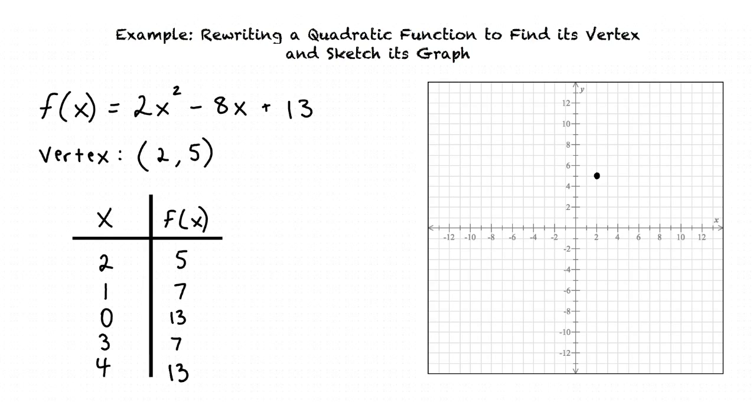Now that we have found all of our points, let's graph our parabola. After plotting each of the points and connecting the points with a curve, we have graphed our parabola. We have now rewritten our quadratic function in vertex form, found the vertex, and sketched the graph.